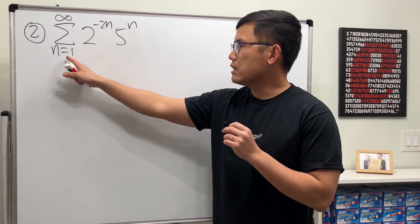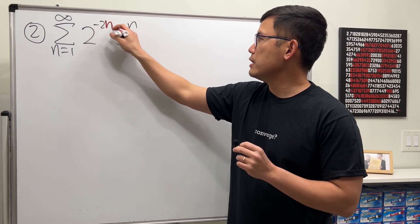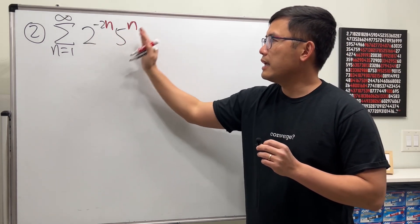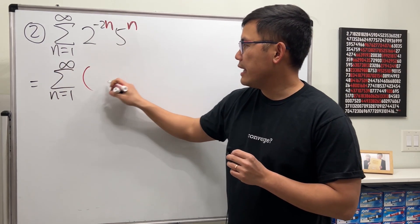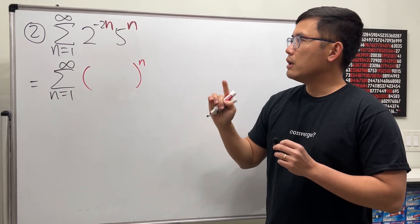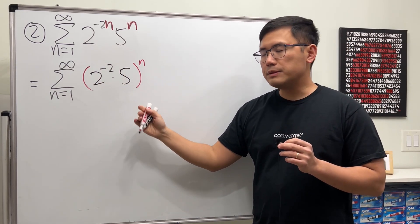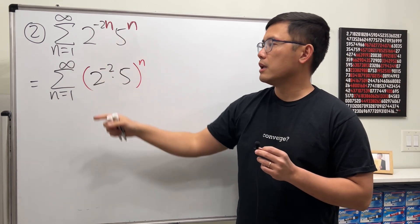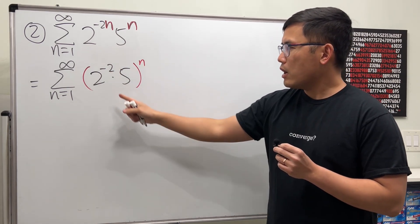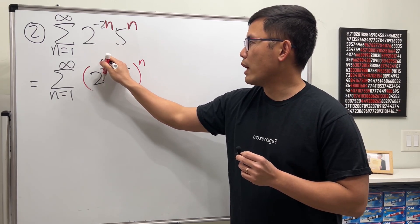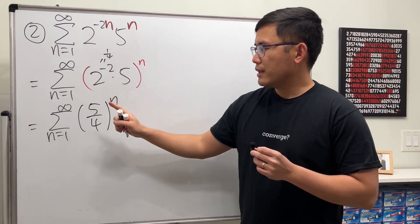For number two, we have the series as n goes from one to infinity of two to the negative two n times five to the n. Since n appears in both exponents, we can bring the n's out as a single power: the series becomes the sum of two to the negative two times five, all raised to the nth power. Two to the negative two is one over four, and one over four times five is five over four.